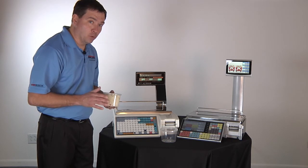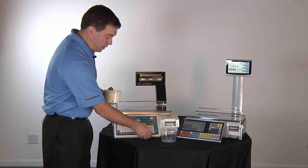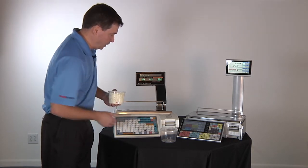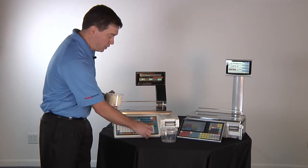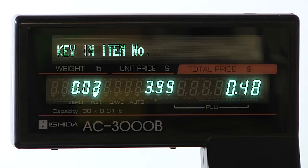Now that means that at my single range scale I need to take a 4 tare and I'm going to put a unit price of $3.99 in. Place my potato salad on the scale for a total price of $4.59.